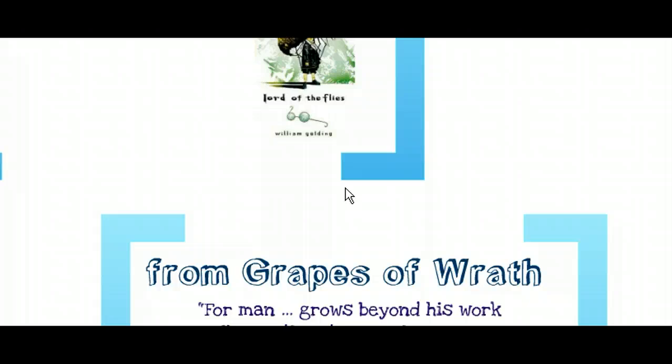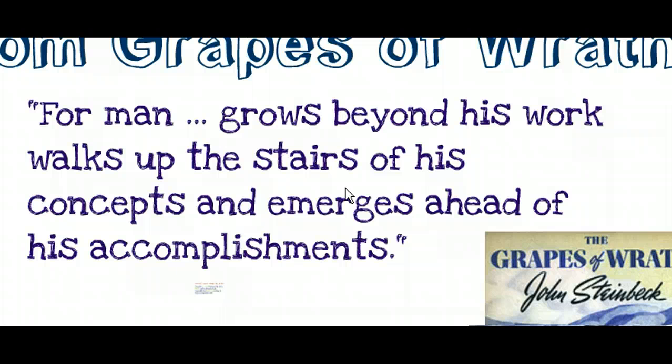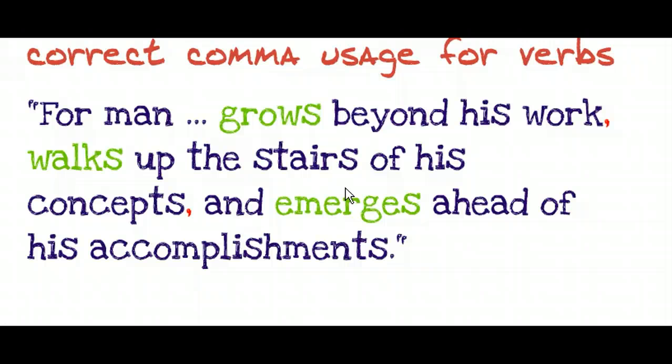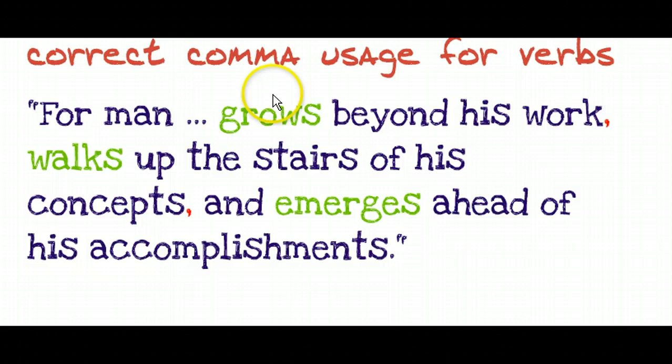Here's another excerpt from Grapes of Wrath. Teachers, please pause the presentation; students, take a minute to decide where the commas should go in this sentence. The rule that applies is using correct commas for verbs. There are three distinct verbs that apply to the subject of man: grows, walks, and emerges. Because there are three verbs, we need two commas — one after 'work' and the other after 'concepts.'